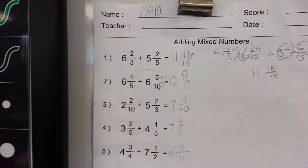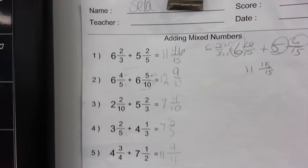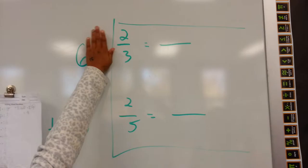We're doing number one. Read the fraction. Six and two-thirds. Yes, six and two-thirds plus five and two-fifths. Now why is it set up like this? Because we're going to worry about that right now, so we're adding.